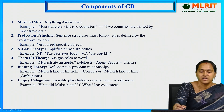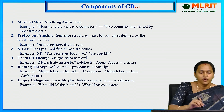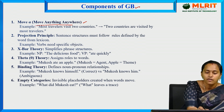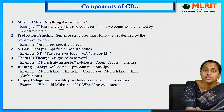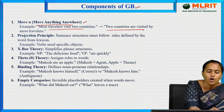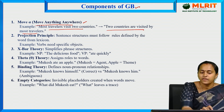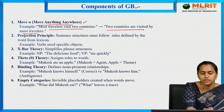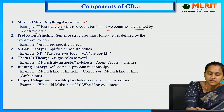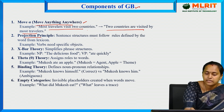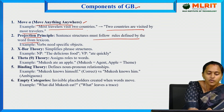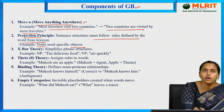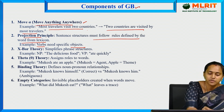The components of Government and Binding Theory include: Move Alpha — meaning move anything from anywhere. For example, 'Most travelers visit two countries' becomes 'Two countries are visited by most travelers,' showing flexible movement of sentence elements. The Projection Principle states that sentence structures must follow rules defined by words from the lexicon — for example, a verb needs specific objects. X-Bar Theory simplifies phrase structures — for example, 'the delicious food' is a noun phrase and 'eat quickly' is a verb phrase.